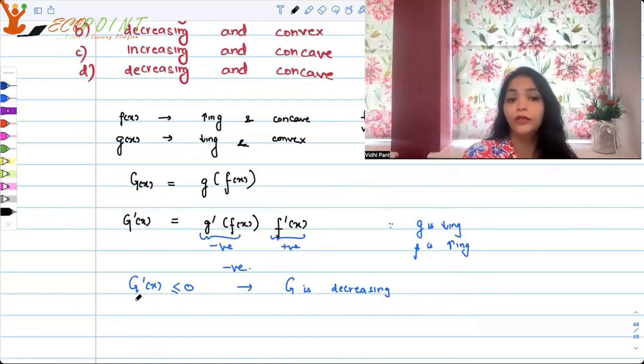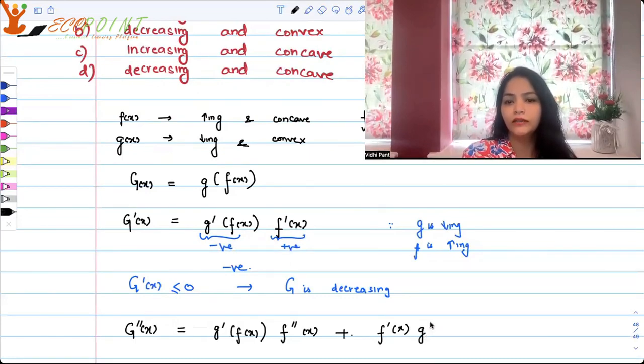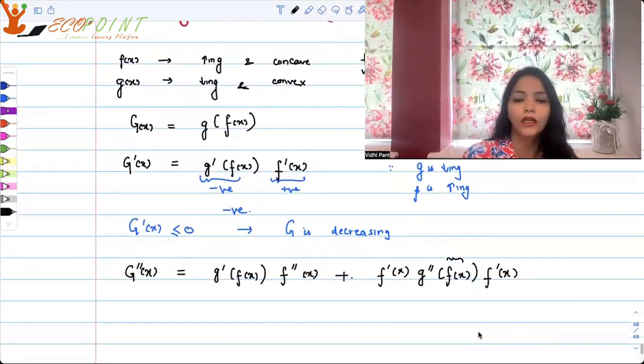But the story doesn't end here. We need to figure out curvature. For curvature, I must differentiate once again to get G''(x). You've got to use the product rule here. So what we can do is: g'(f(x)) as is, differentiating f'(x) gives f''(x), plus keeping f'(x) as is, differentiating g'(x) once again gives g''(x), but do not forget the chain rule, so you will have to differentiate the function inside and get f'(x).